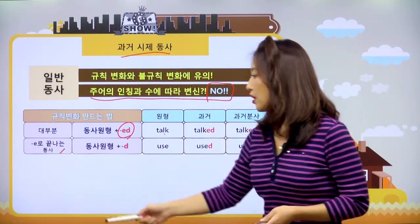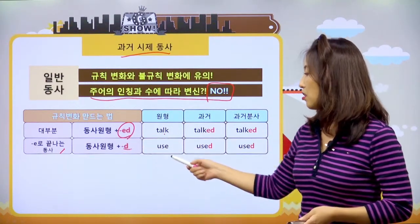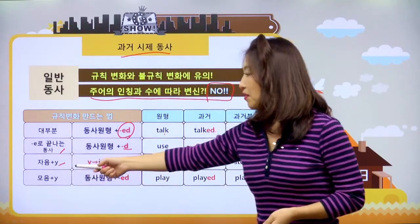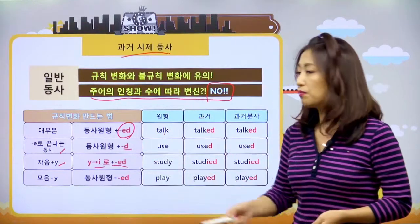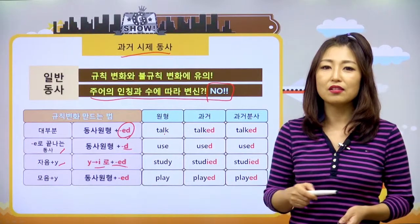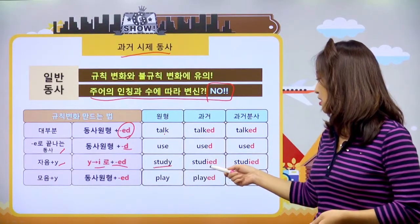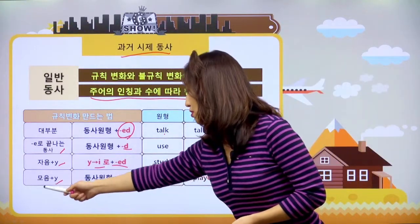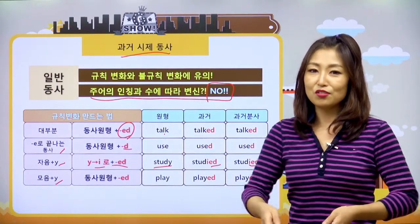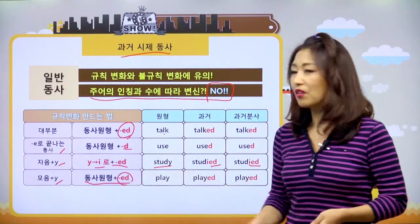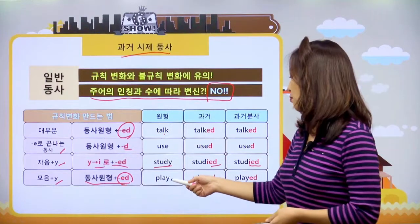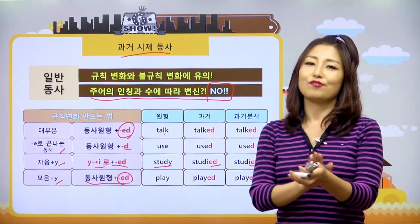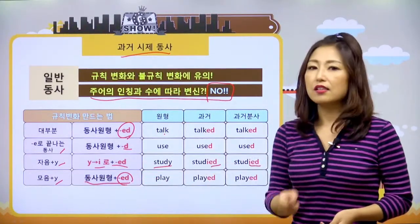두 번째는 E로 끝나는 동사. 동사 원형에 이미 E로 끝났으니까 D만 붙이면 되겠죠. used, used, used 이렇게. 세 번째, 자음 플러스 Y로 끝나는 동사는 Y를 I로 고치고 ED를 붙인다고 했어요. 예를 들면 study 하면 studied, studied. 네 번째, 모음 플러스 Y로 끝나는 동사는 그냥 동사 원형에 ED 붙이면 돼요. Y 안 고쳐도 돼요. 앞이 모음이니까. 그래서 play 하면 played, played.